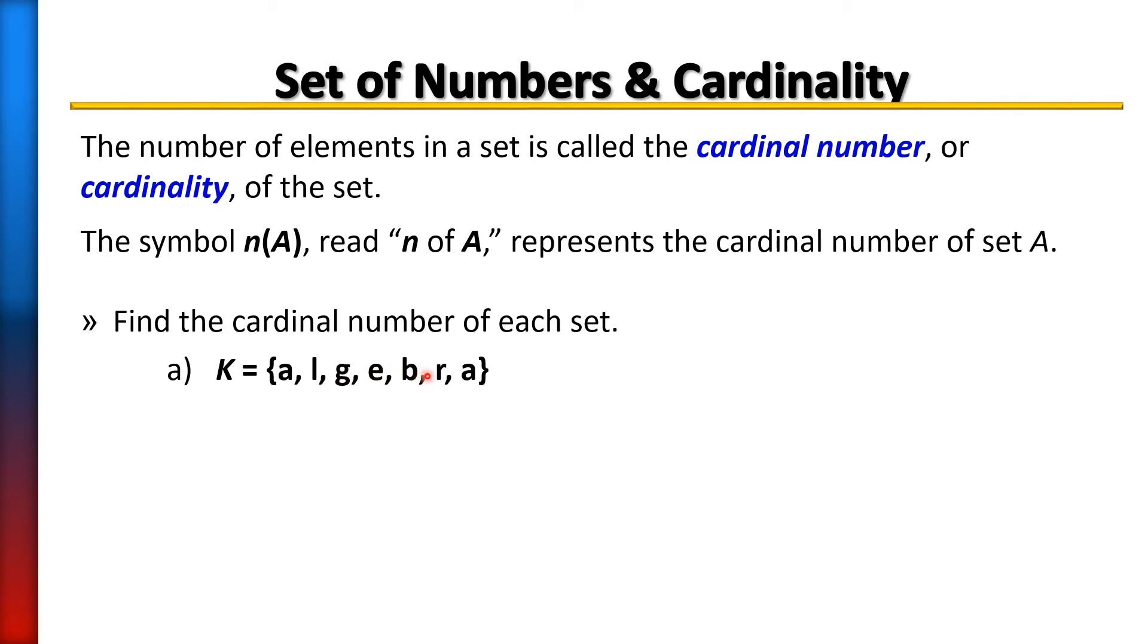So there are six different or unique members in the set, so n(K) equals six. Now notice I did not count the A twice because A is a member or an element of that set. Doesn't matter how many times it appears, you can think of it as a person. A is there in that set. So you're not going to count it twice if a member or an element in a set repeats itself. We want to know for the cardinal number how many different unique members there are in the set.